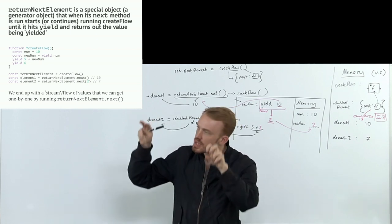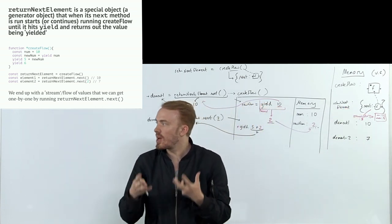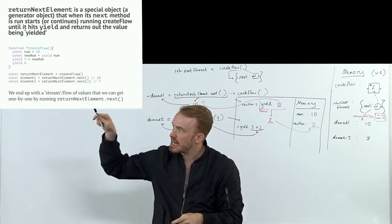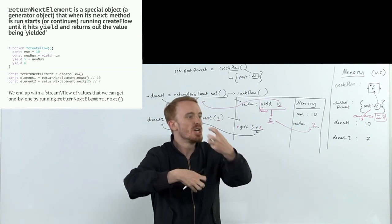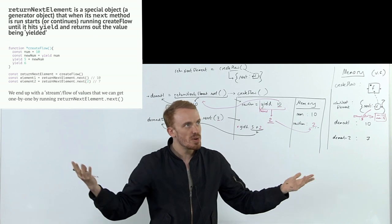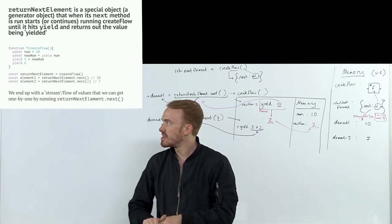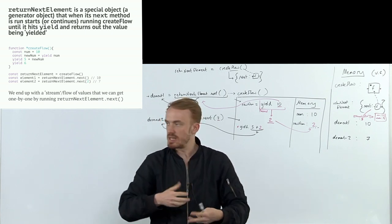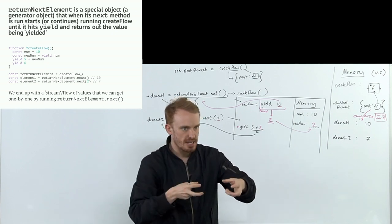It hits yield, returns out the value being yielded, pauses or sort of exits the execution context, just holds on to it here. We end up with a stream flow of values that we get one by one by running return next element dot next. We get the next element, the next element, but look how dynamically we control what they are. Every time you say yield keyword, the next thing is this expression that's going to evaluate to our next returned or our next element in the flow of elements coming out of our flow.